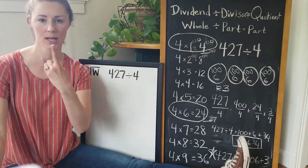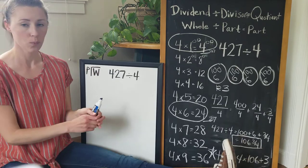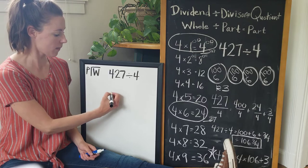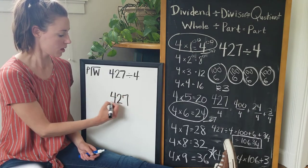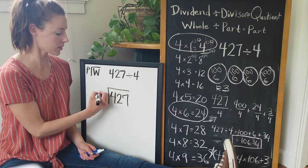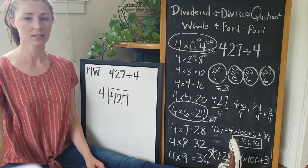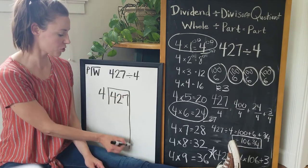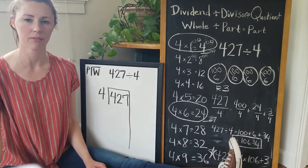So we only need to have one digit. So I start with my whole, my whole is 427 and that is going to go inside of the box. And then on the outside of the box is our divisor, and our divisor this time is four. And the reason it's called the big seven is because now we're going to draw the line down to show a big seven.